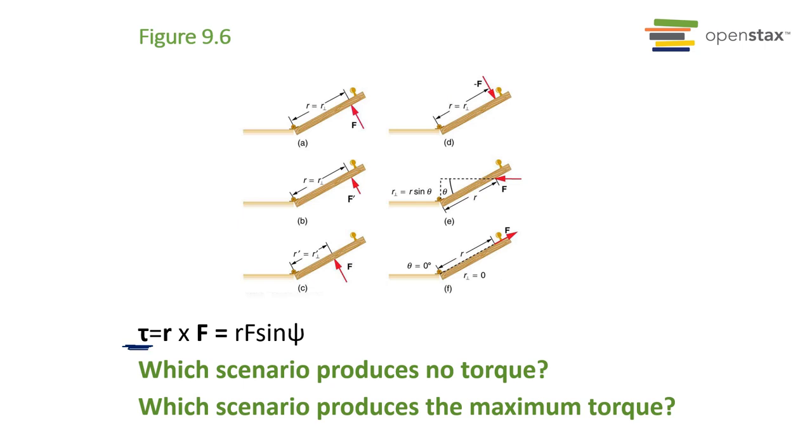We represent torque as the Greek letter tau. This distance r is the distance from the pivot point to the force that you're applying. So if we apply this force at that location from the pivot point. Now this notation here is cross product. Cross product is a math shortcut saying we are multiplying perpendicular pieces of the two vectors.